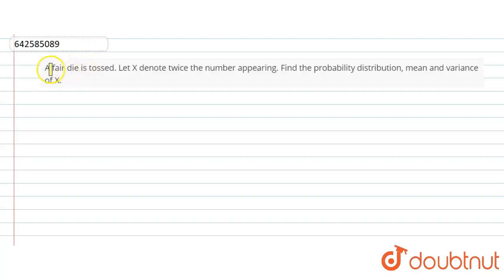Hello everyone, let's start with the question. The question says, a fair die is tossed. Let x denote twice the number appearing. Find the probability distribution, mean and variance of x.